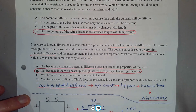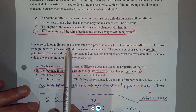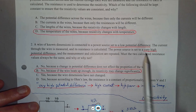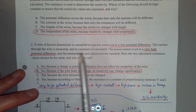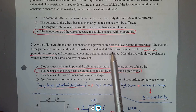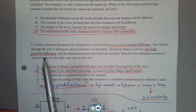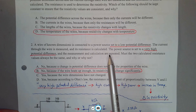Number 2 gets at the same idea about how temperature affects resistivity and resistance. A wire of known dimensions is connected to a power source set to a low potential difference. The current through the wire is measured and its resistance is calculated. For a low potential difference with a given resistance, the current will be fairly low. The power source is then set to a very high potential difference and the measurements are repeated.